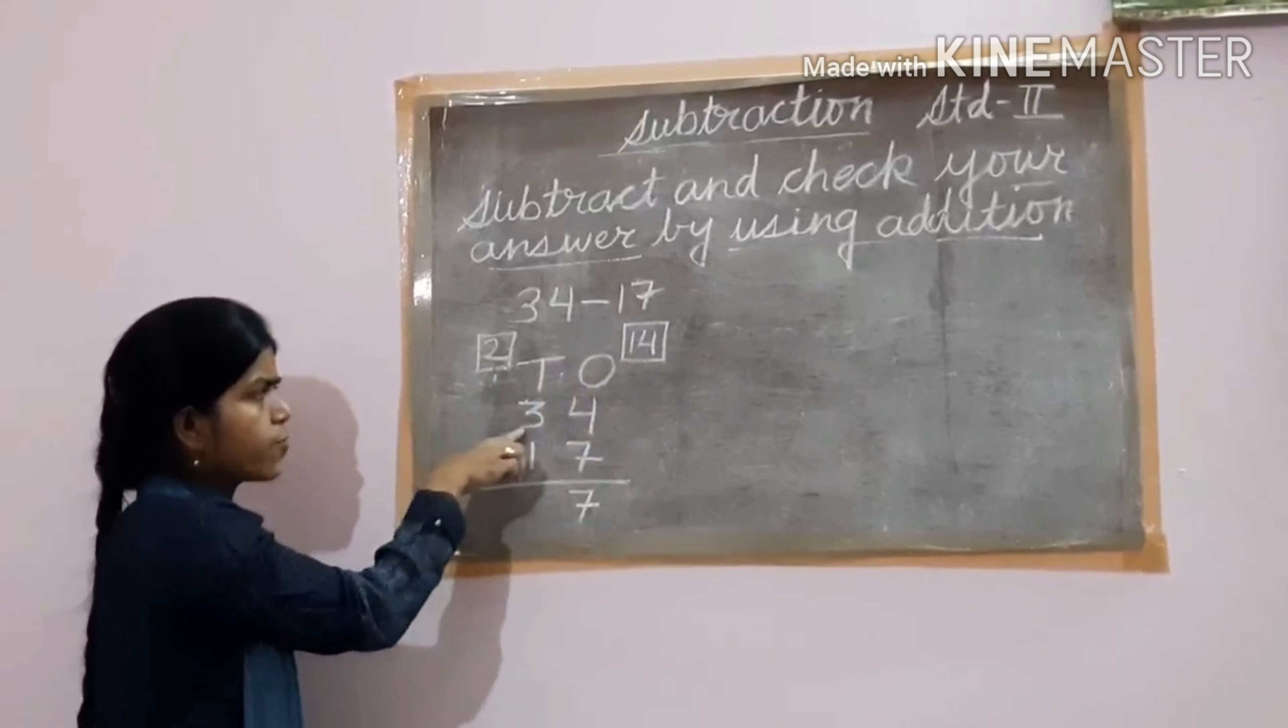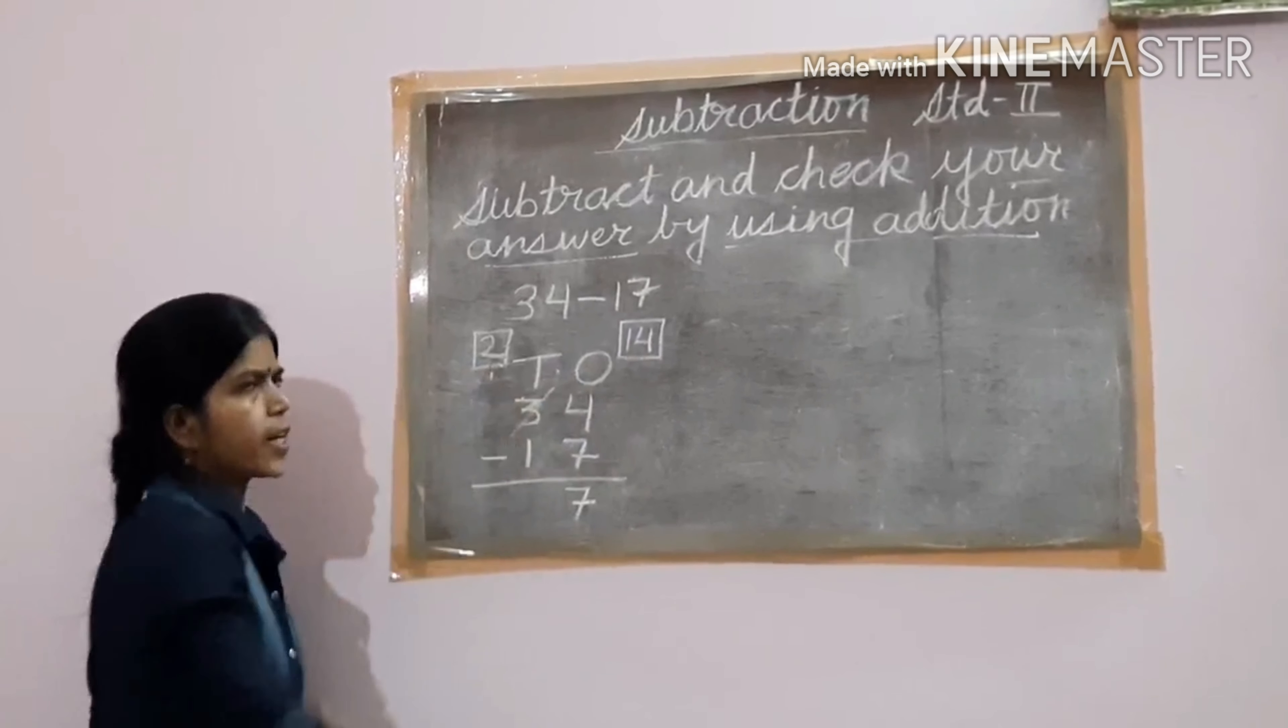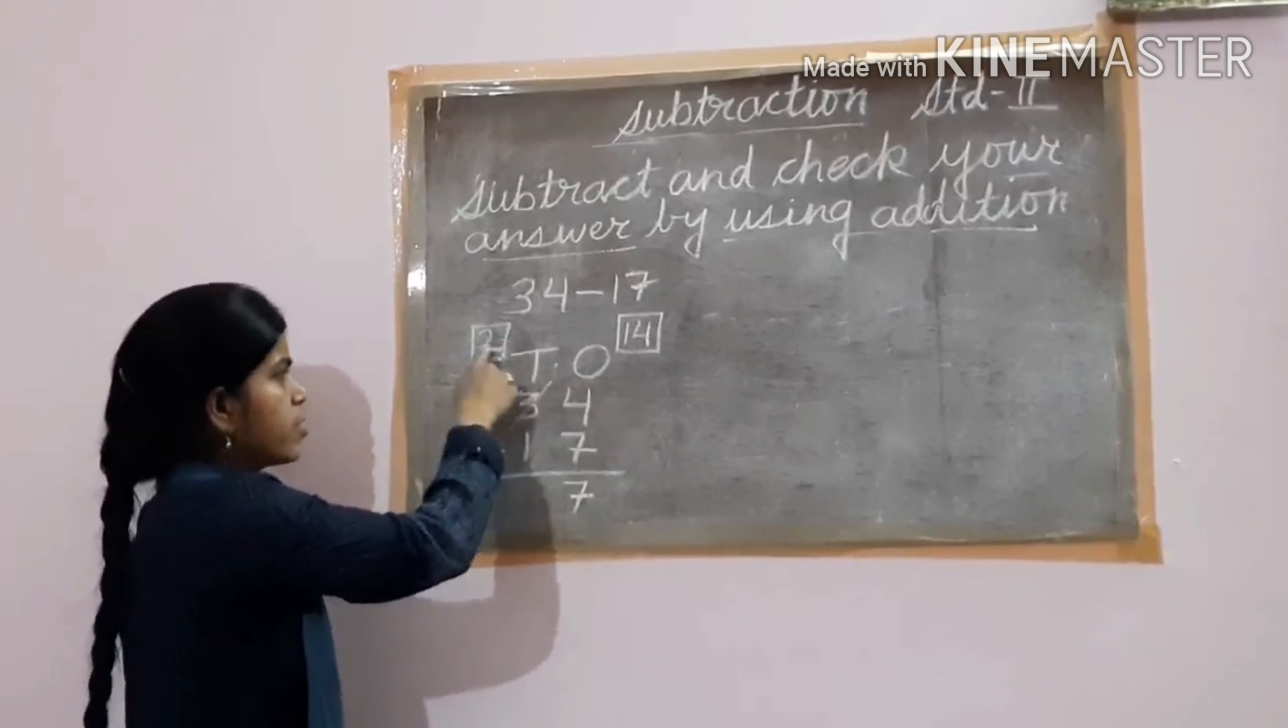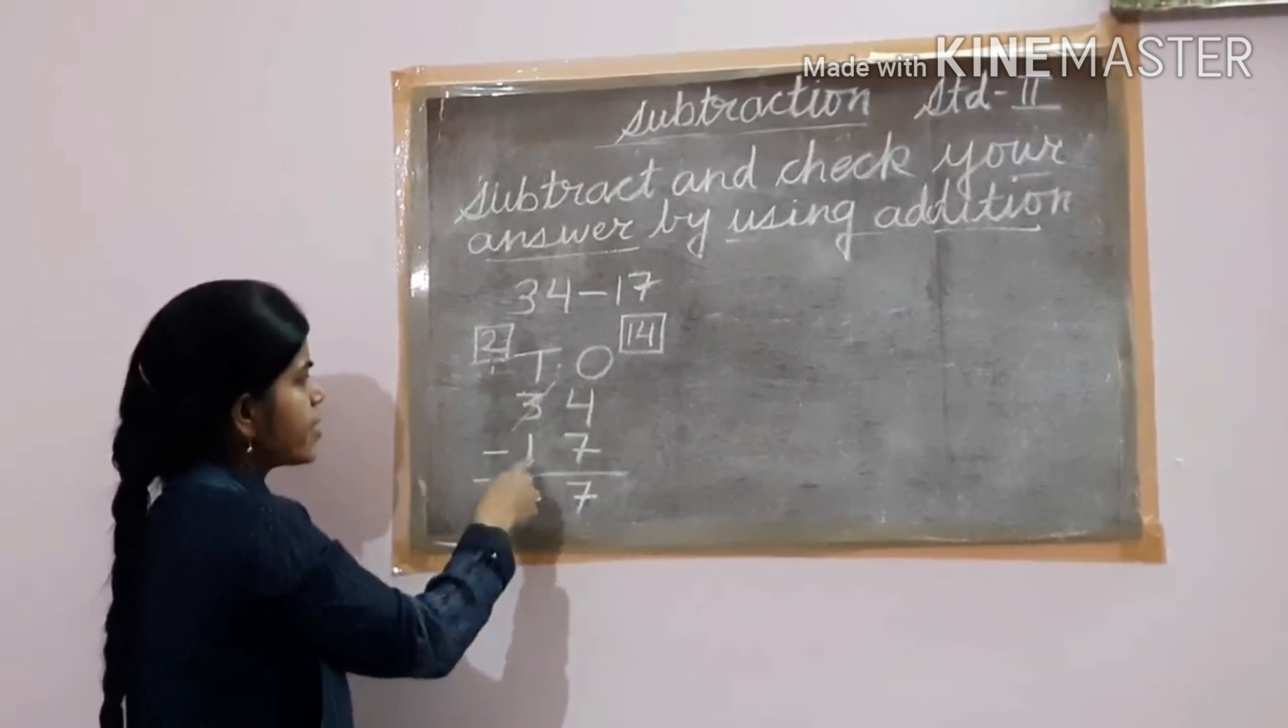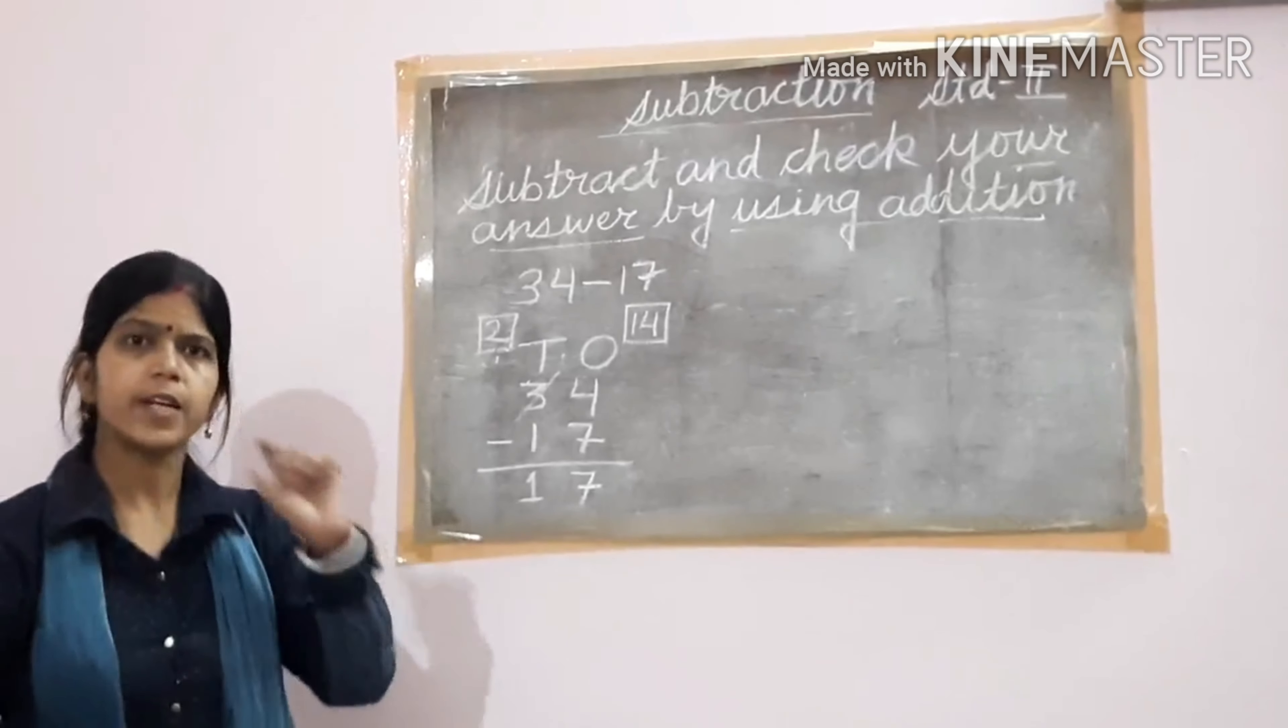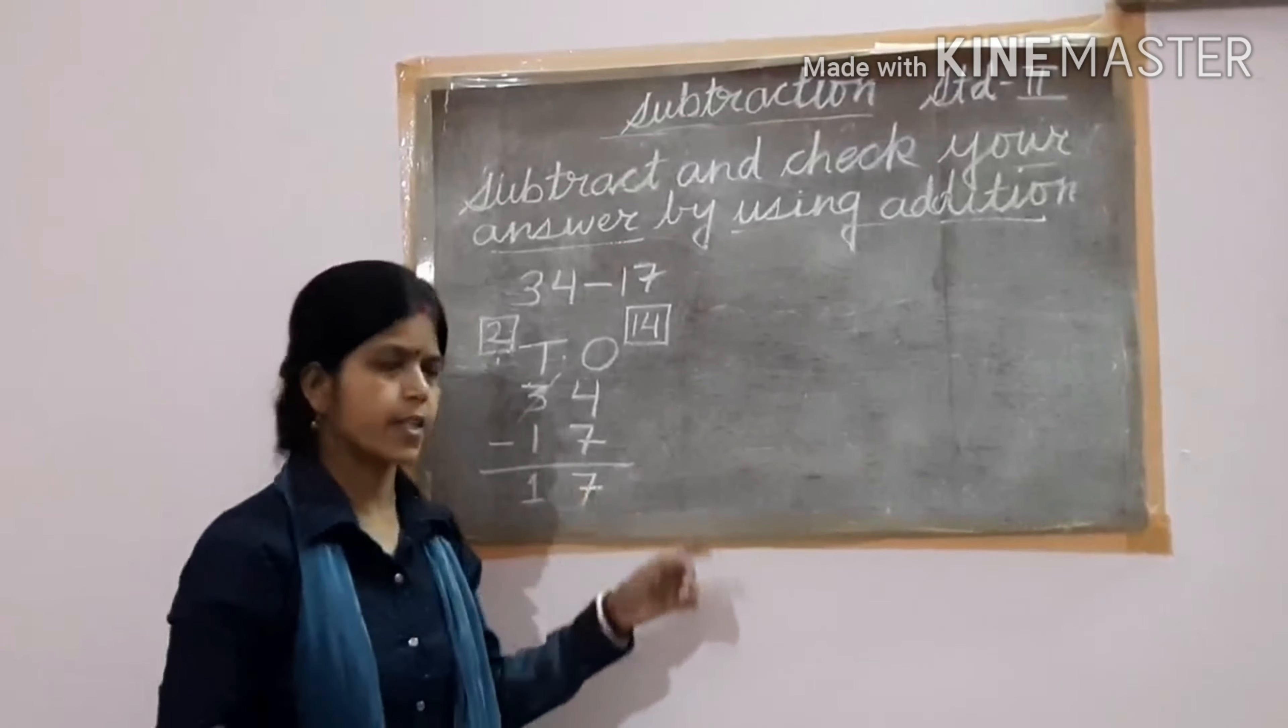So 14 minus 7 is equal to 7. And here, don't subtract from this. You have to subtract from 2. So 2 tens only, because 1 ten already gave to the ones. So 2 tens minus 1 ten, that is 1. Now confusion may be whether your subtraction is correct or not, so you can check it.